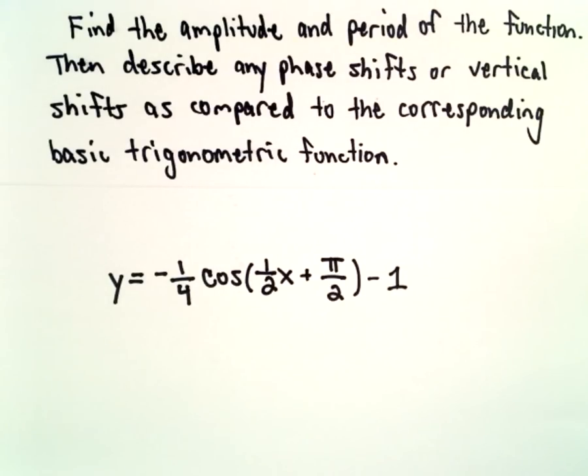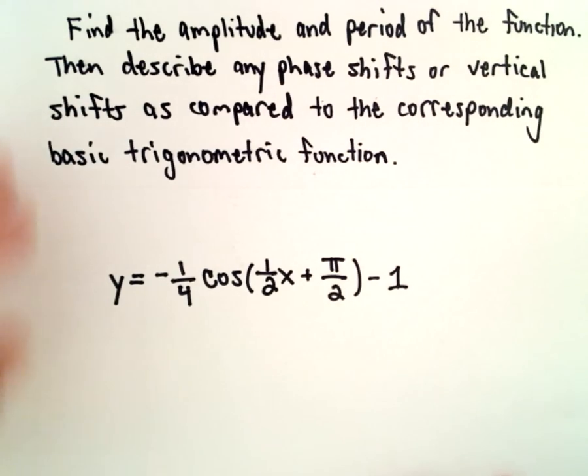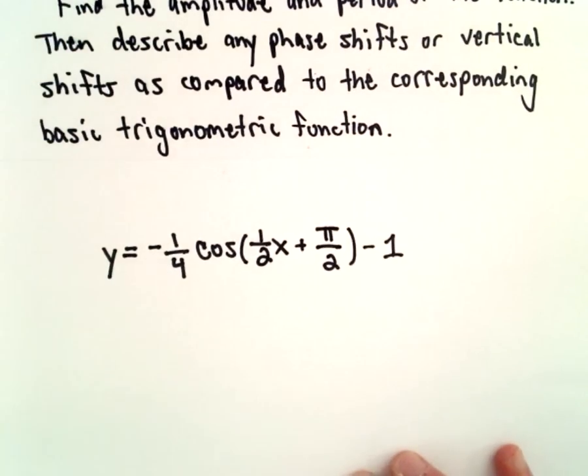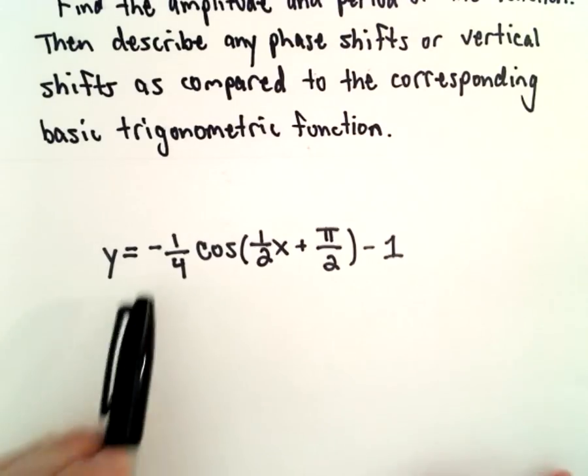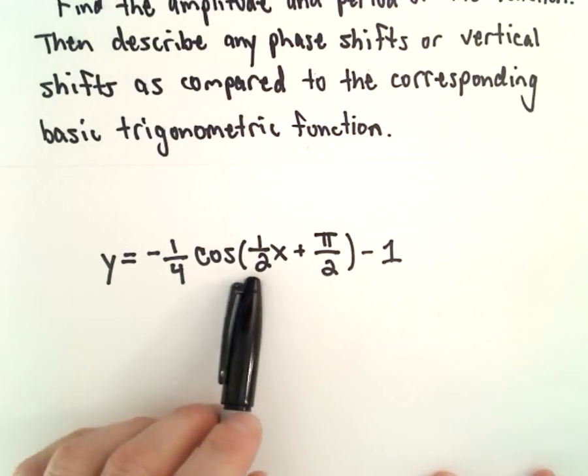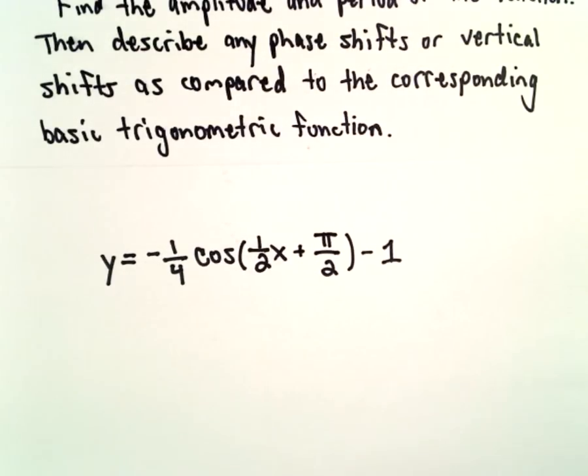Okay, in this example we're going to find the amplitude and period of the given function, and then we're also going to describe any phase shifts or vertical shifts when compared to the corresponding basic trig function. So we've got y equals negative one-fourth cosine of one-half x plus pi over two minus one.